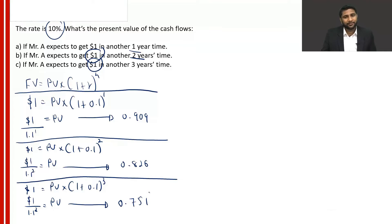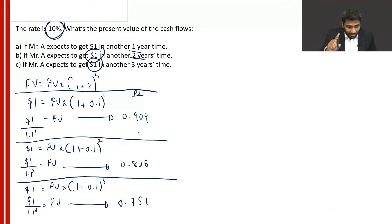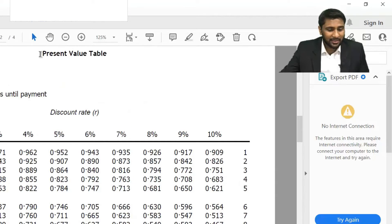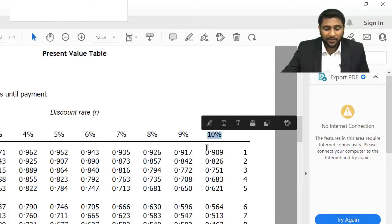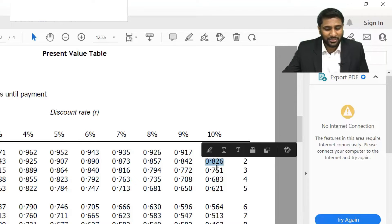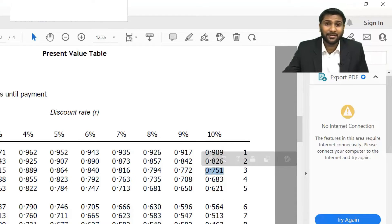So here's what we calculated: if the rate is 10% and you are getting $1 after a year, the present value — today's value of that $1 — is 0.909. If you are getting $1 after two years at 10%, today's value is 0.826. And if you are getting $1 after three years at 10%, today's value is 0.751. Now see the present value table at 10%: Year 1 gives 0.909, Year 2 gives 0.826, Year 3 gives 0.751.